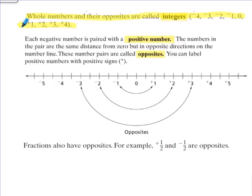Well, what is an opposite number? Every negative number is paired with a positive number. The numbers in the pair are the same distance from zero but they're in opposite directions on the number line. So if you look at the number line here, you can see that for example, one and negative one are opposites because each one is one space away from zero.